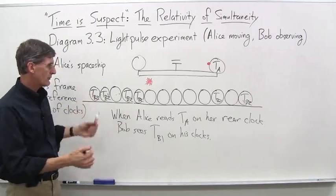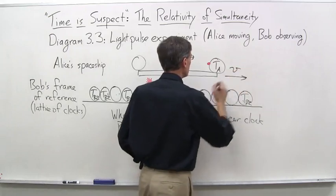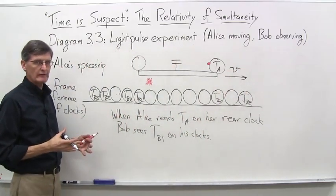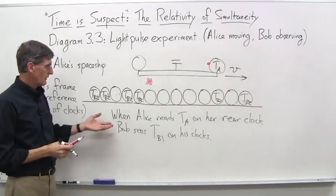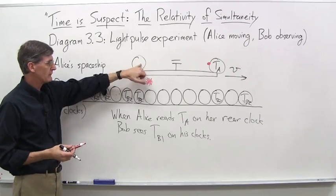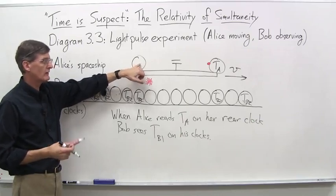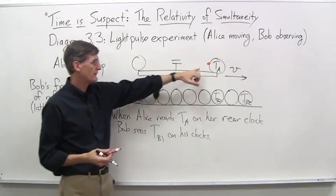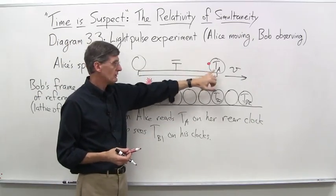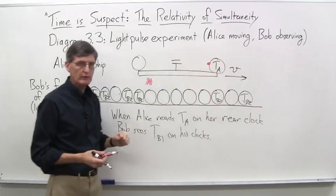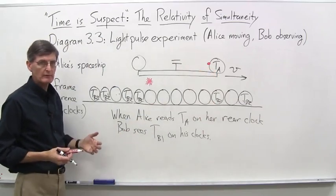Now, Bob is saying, and remember, again, Alice is moving this way with velocity V. Now, Bob is saying, something's wrong, Alice, because a minute ago, the photon, a few seconds ago, your leftward-going photon hit this clock, and it read T sub A, but my clock read TB1, and the other photon hit this clock. It read T sub A, but my clock is at TB2. We've got a problem here.